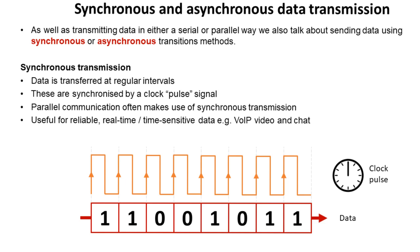With synchronous transmission, data is transferred at regular intervals. There is some kind of synchronisation, usually automated by a computer's clock pulse. Parallel communication often makes use of this synchronous transmission method. It is really useful for reliable real-time and time-sensitive data — the sort of thing that happens when you're doing real-time voice over IP, video conferencing, and chat.